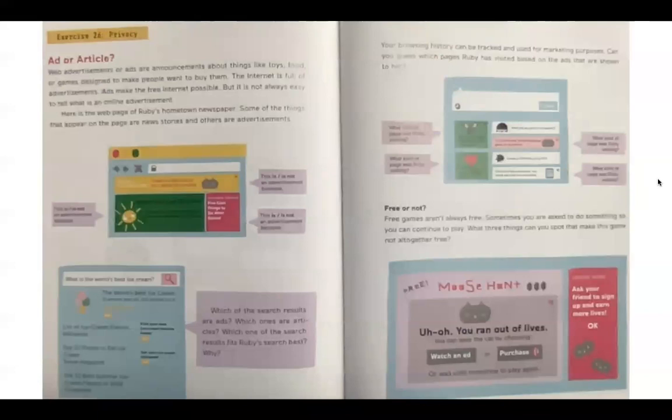Exercise 26. Ad or article. Web advertisements or ads are announcements about things like toys, food, or games designed to make people want to buy them. The internet is full of advertisements. Ads make the free internet possible, but it is not always easy to tell what is an online advertisement. Here is the web page of Ruby's hometown newspaper. Some of the things that appear on the page are news stories and others are advertisements.